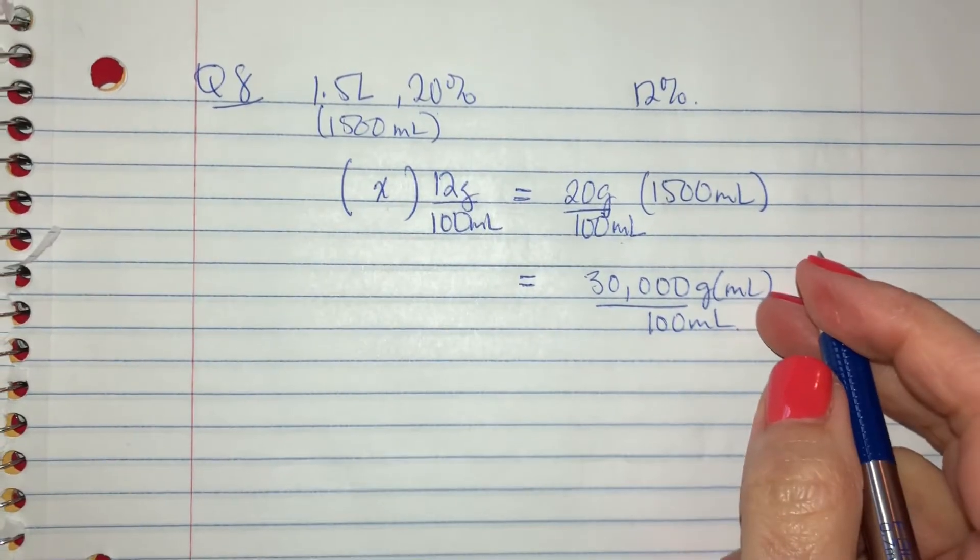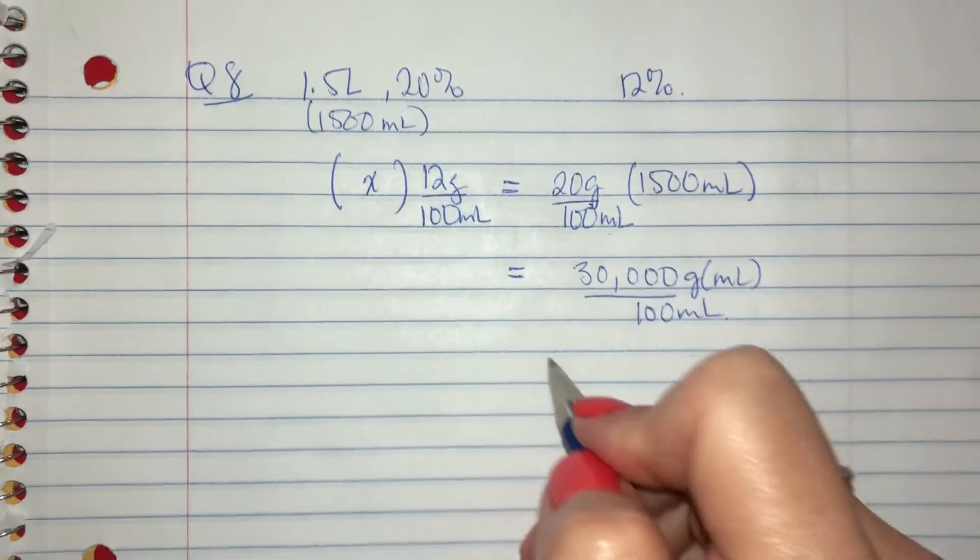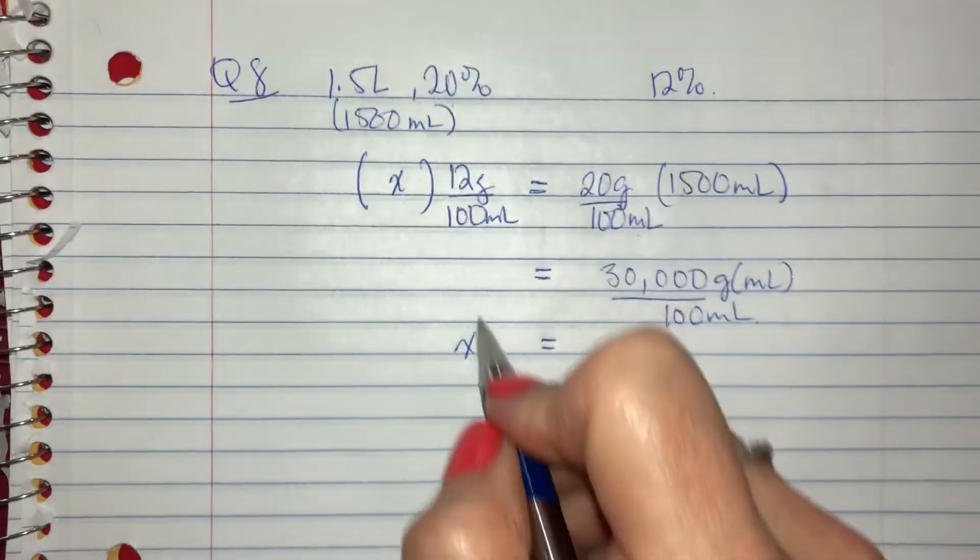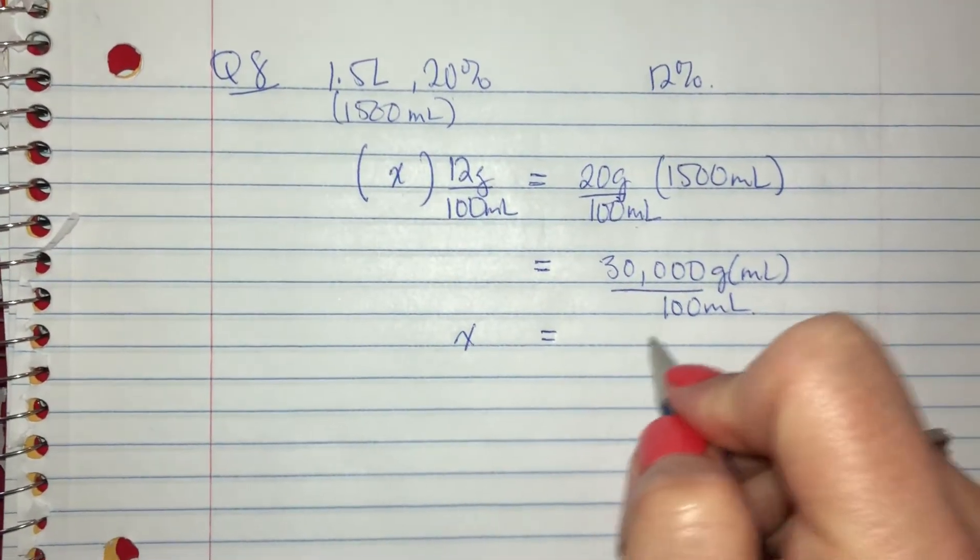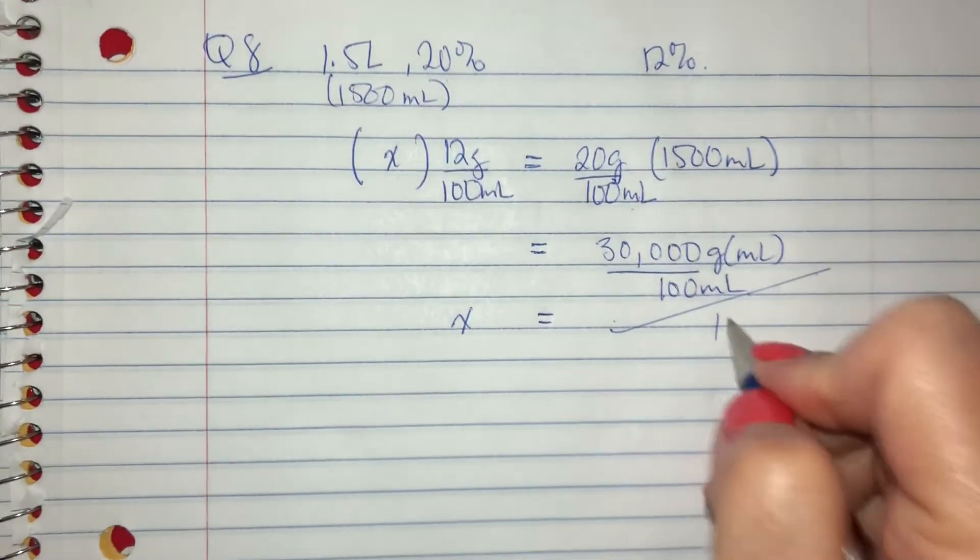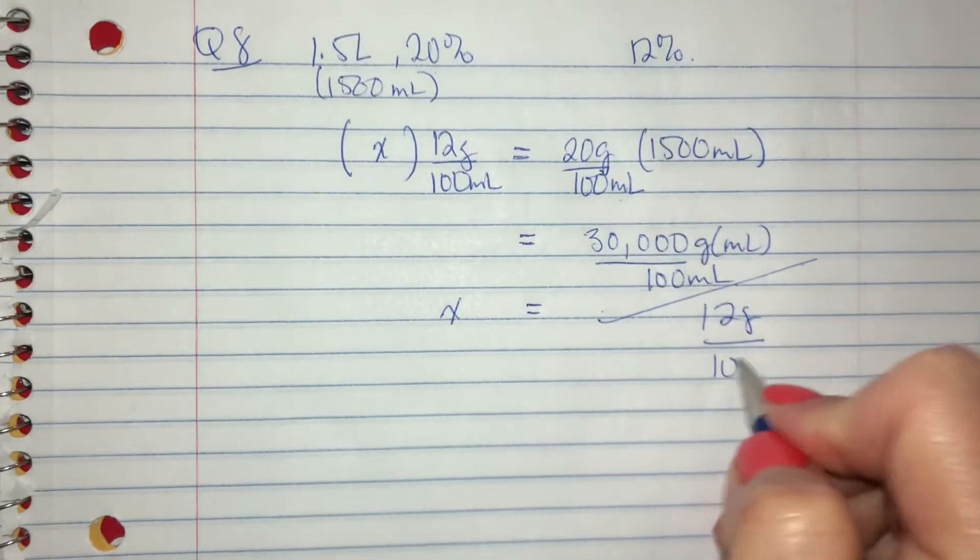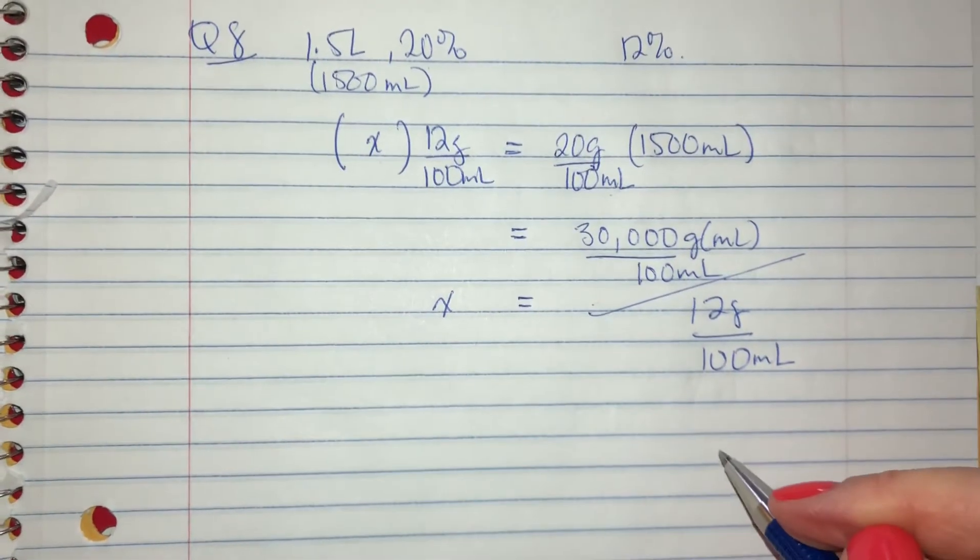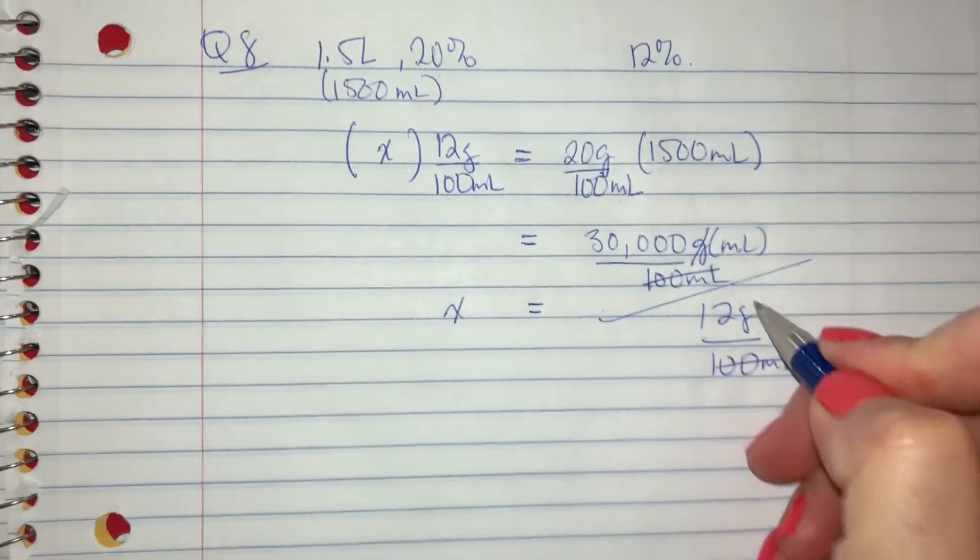And then what I can do is I can say X and I can start bringing this over. Okay. So I'm taking this whole thing and I'm dividing it by 12 grams over 100 mils. And I'm going to start deleting things that are common. So this is common. This is common.